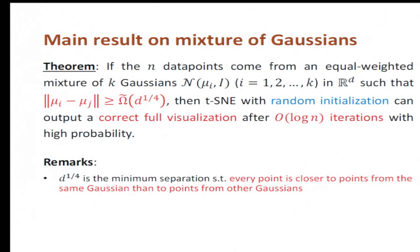Here are some remarks. First, most of you are probably familiar with the fact that d to the one quarter is the minimum separation, such that every point is closer to points from the same Gaussian than to points from all other Gaussians. So this is essentially necessary for t-SNE to succeed because it is trying to focus on close-by data points.